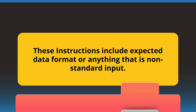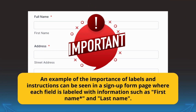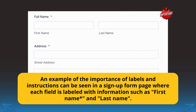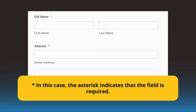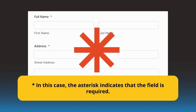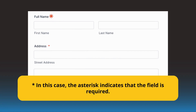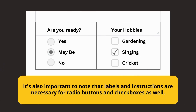An example of the importance of labels and instructions can be seen in a sign-up form page where each field is labelled with information such as first name and last name. In this case, the asterisk indicates that the field is required. It's also important to know that labels and instructions are necessary for radio buttons and checkboxes as well.